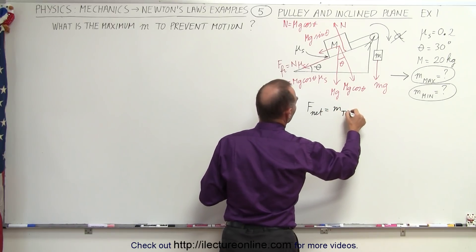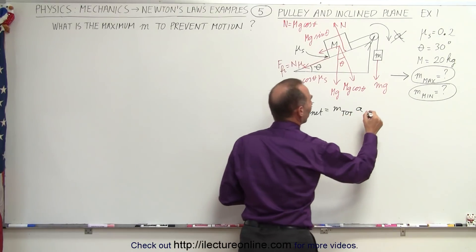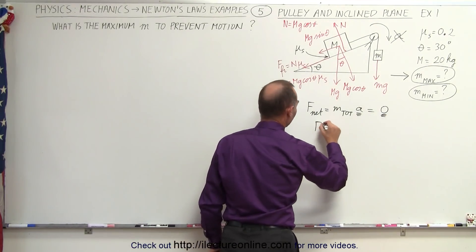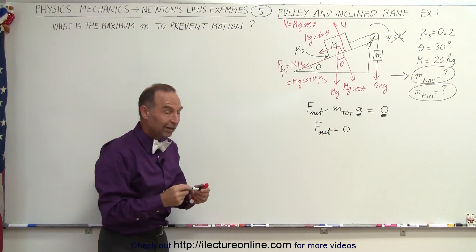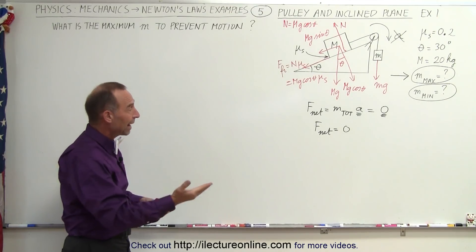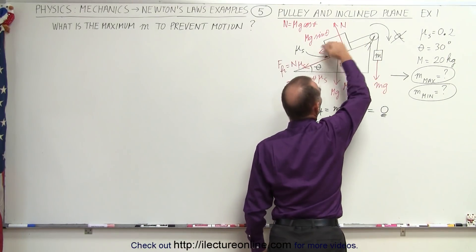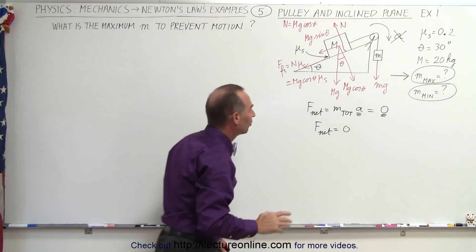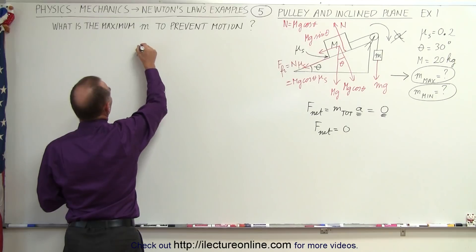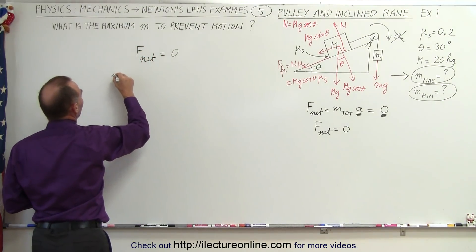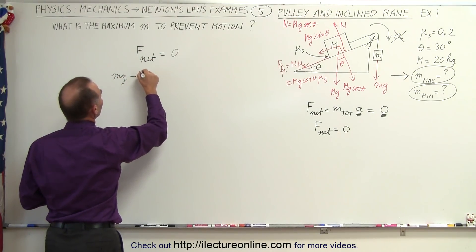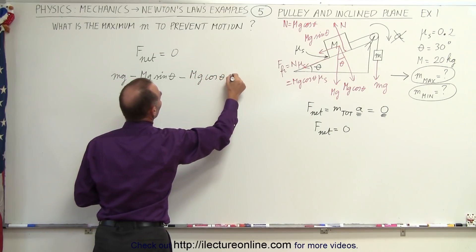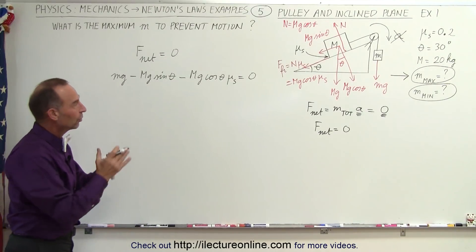Now that all forces are identified, we use F_net = m_total × acceleration. Since we don't want acceleration, we set it equal to zero, meaning F_net = 0. We identify forces that would aid acceleration minus forces that oppose it. Small mg aids acceleration; Mg·sinθ and Mg·cosθ·μs both oppose it. So: small mg − Mg·sinθ − Mg·cosθ·μs = 0.